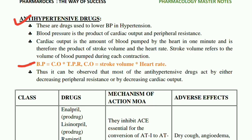So, blood pressure is equal to CO into TPR. CO is equal to stroke volume into heart rate.